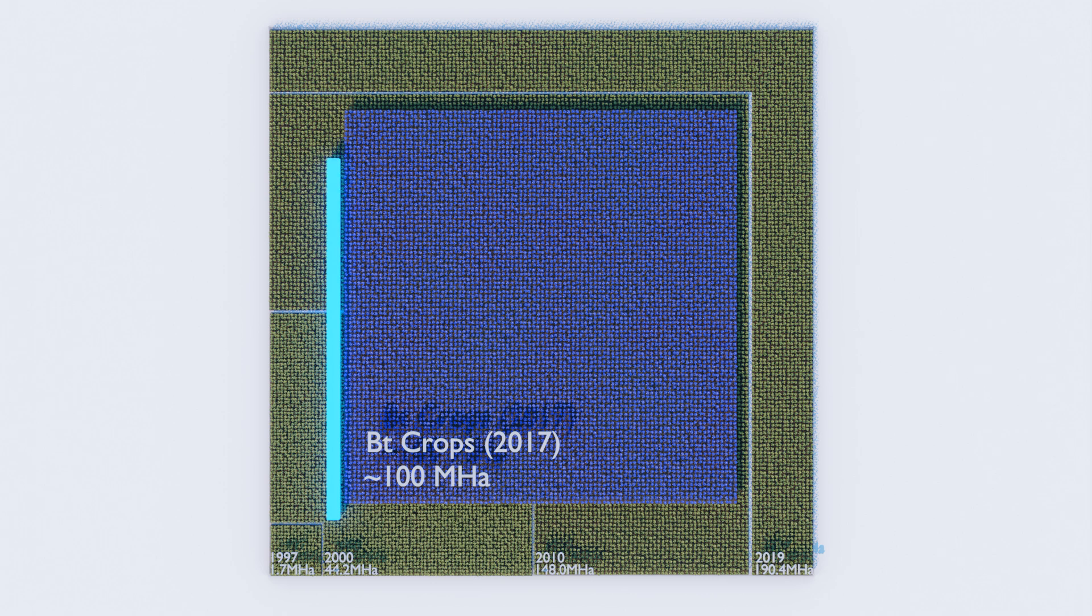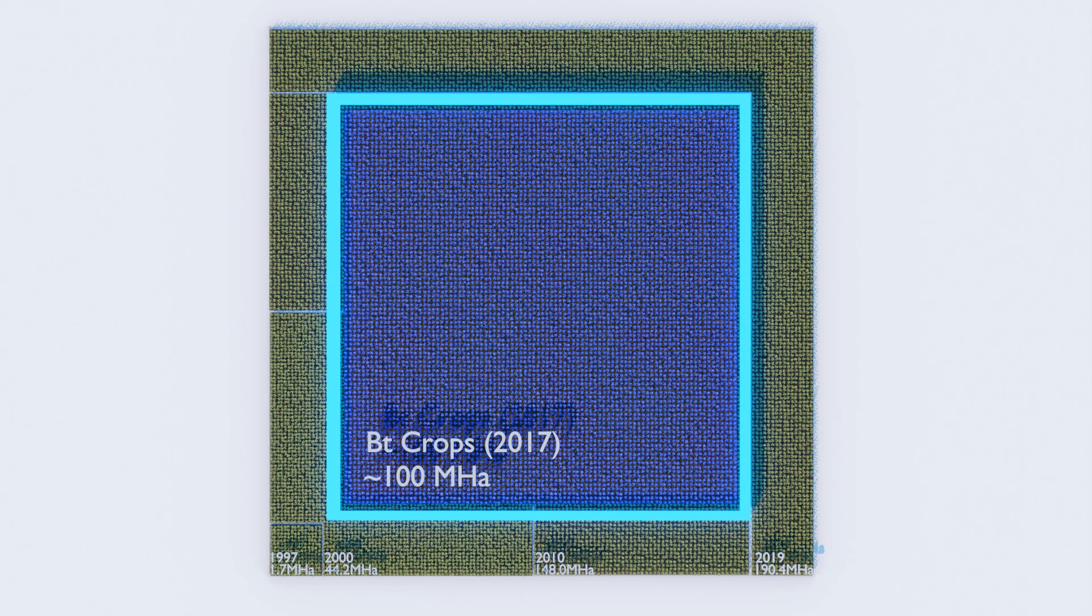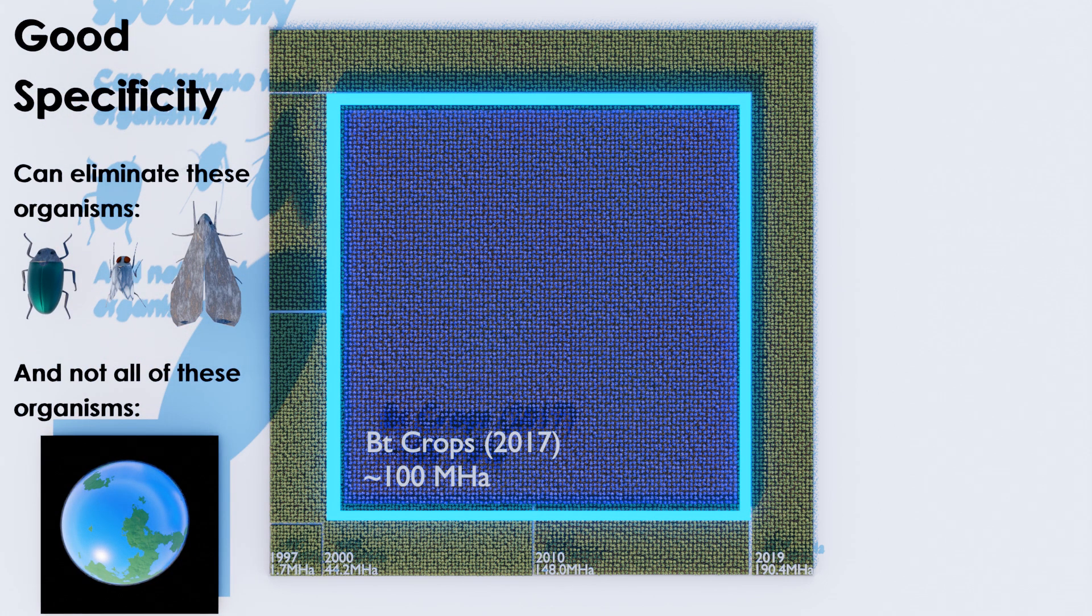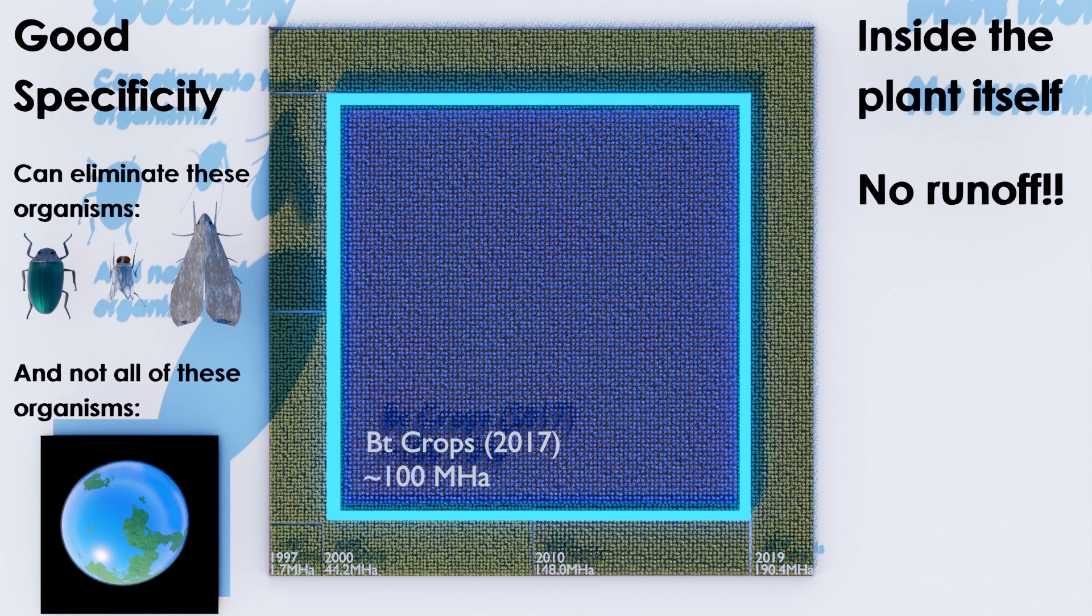By 2017, about 100 million hectares of BT crops were grown around the world. And years of growing them has yielded only good results. The specificity of the BT toxin is good enough to show little to no activity in non-target organisms, unlike typical wide-spectrum pesticides. And anything that doesn't feed on the plants won't be exposed to the toxin at all. No runoff.